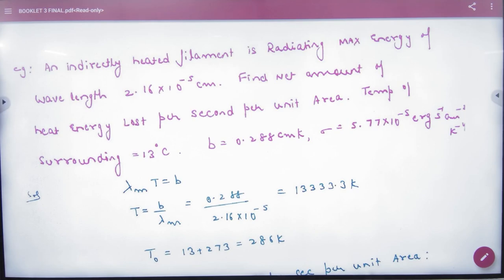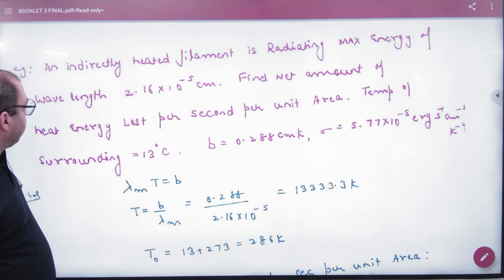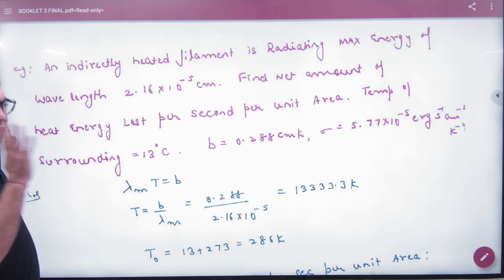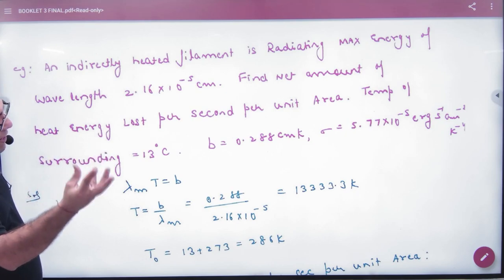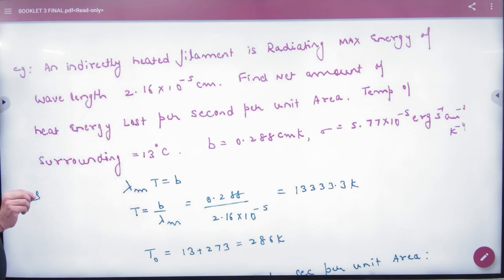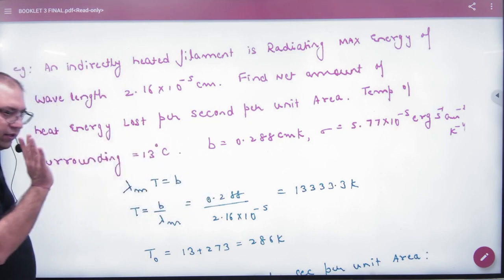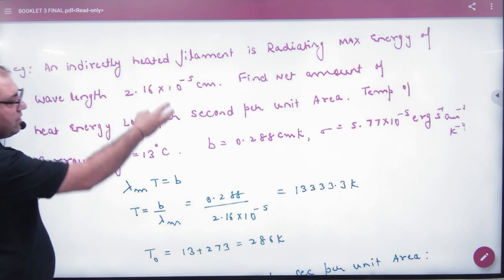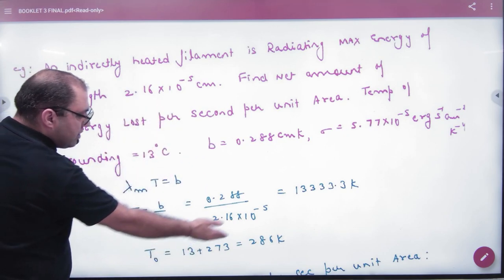An indirectly heated filament is radiating maximum energy at wavelength given. Find net amount of heat energy lost per second per unit area. Temperature of the surrounding and B and sigma are giving a hint. B means Wien's displacement law. Sigma means Stefan's law. Now what do you have to do? You are giving a filament. Filament is giving lambda M. With this statement, the temperature of filament can be calculated. Lambda M is giving T, one thing is finished. Filament is giving a temperature. Surrounding is giving a temperature.